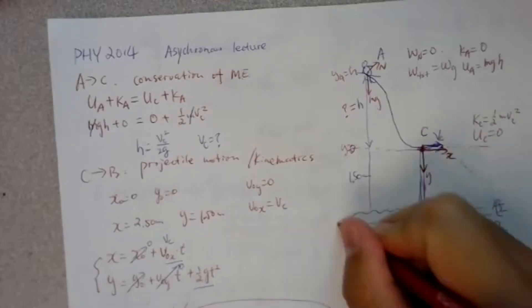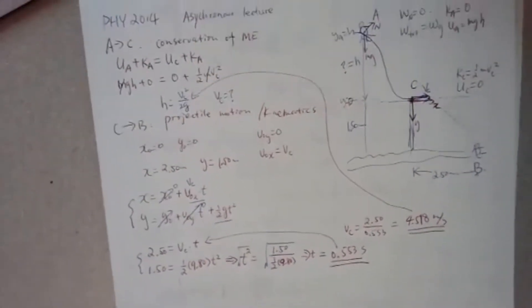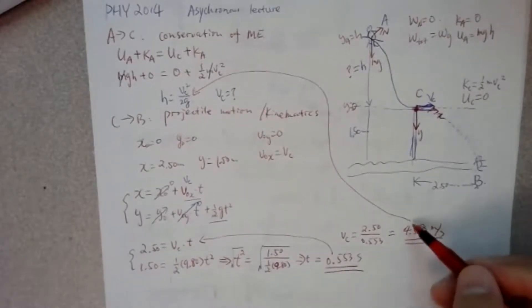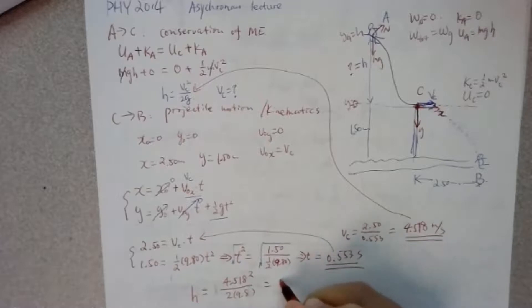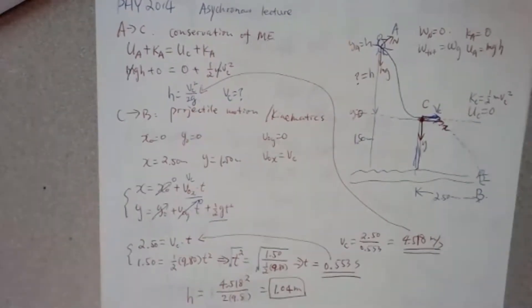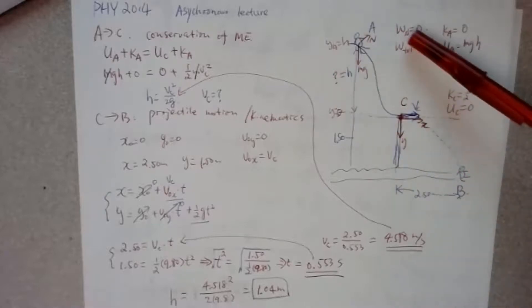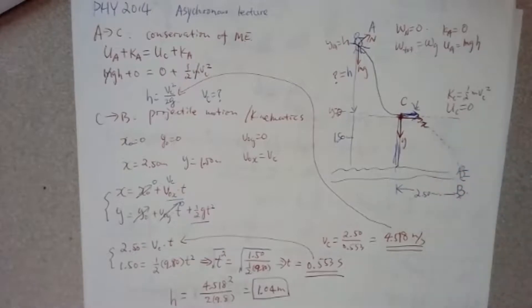Now take Vc back to the energy equation: H equals Vc squared divided by 2g, which is 4.518 squared divided by 2 times 9.8. So H equals 1.04 meters. That's the full solution. You divide it into two parts: first apply conservation of mechanical energy from A to C, then apply kinematics for the projectile motion from C to B. This is a combination of work-energy and kinematics.